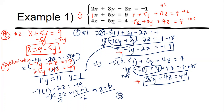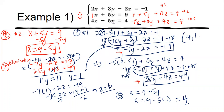Step five: take what we found and plug it back into the equation from step two. Step two gave us x = 9 − 5y, so x = 9 − 5(1) = 4. Our ordered triple solution is (4, 1, 6). This works best if you have vertical paper going downward, but make sure you understand what you're writing — find what's comfortable for you.